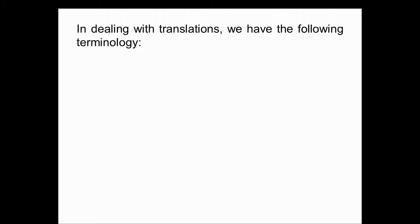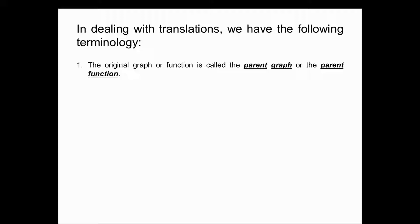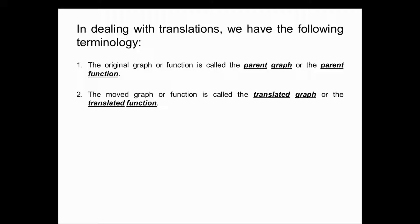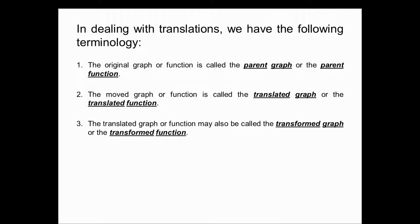In dealing with translations, we have the following terminology. Number one: the original graph or function is called the parent graph or the parent function. Number two: the moved graph or function is called the translated graph or translated function. Number three: the translated graph or function may also be called the transformed graph or transformed function. A translation is a special type of transformation — it just moves it. In order to figure out what something looks like after you move it, it's nice to know what it looked like before, so we need some basic parent functions.